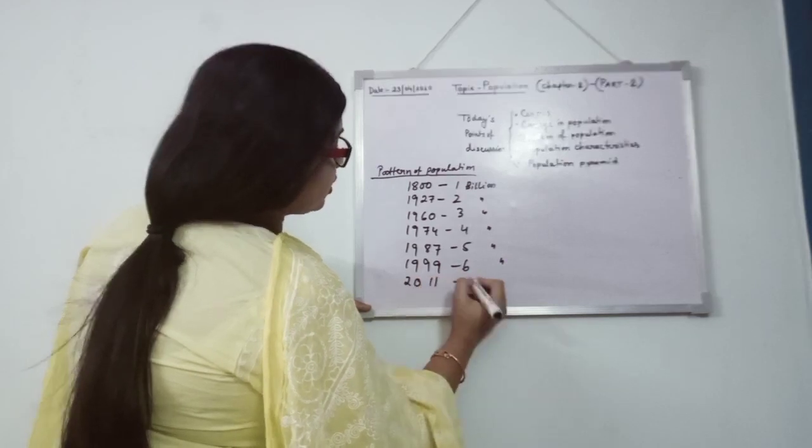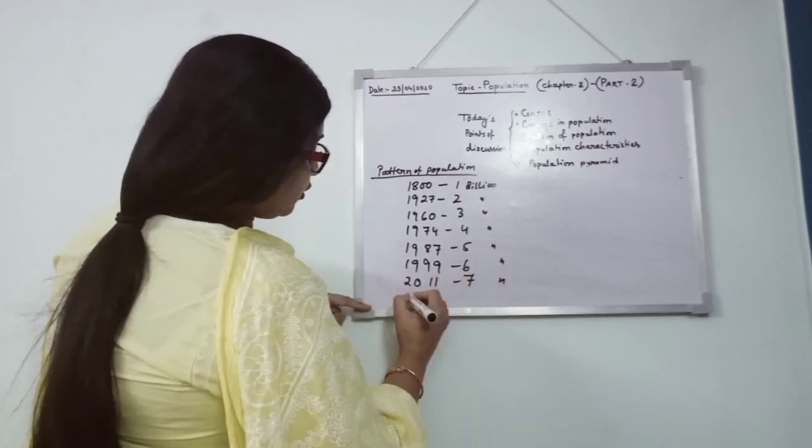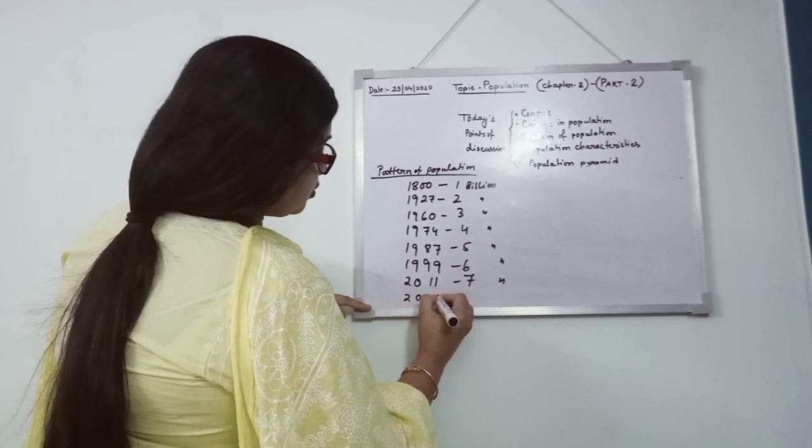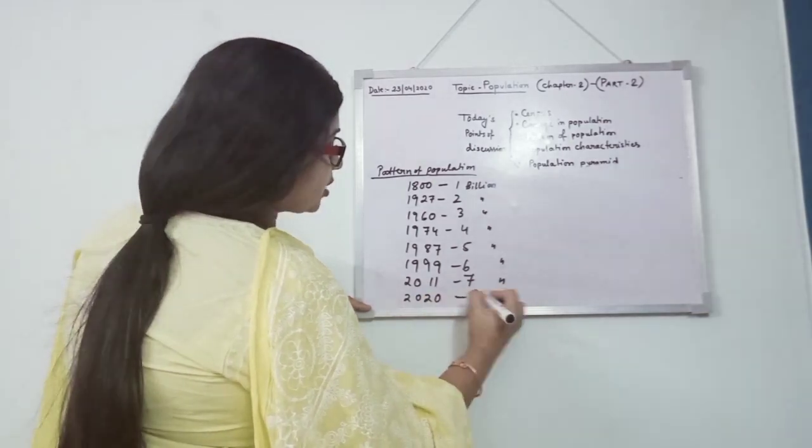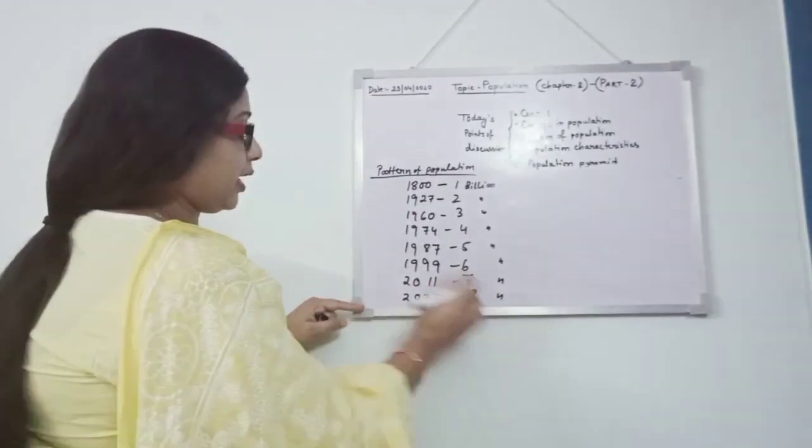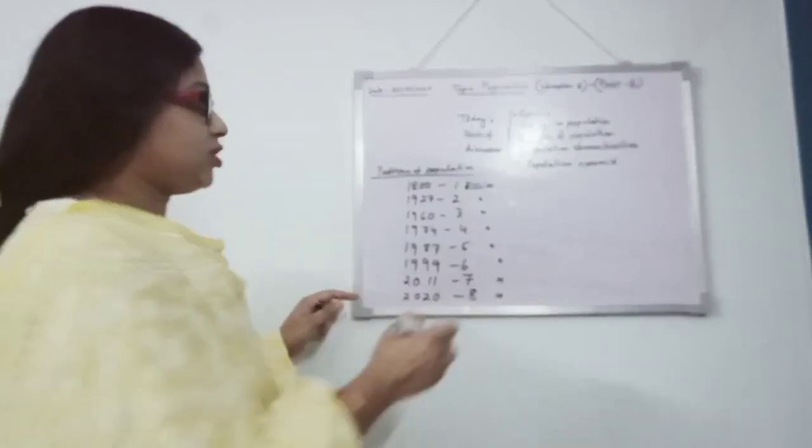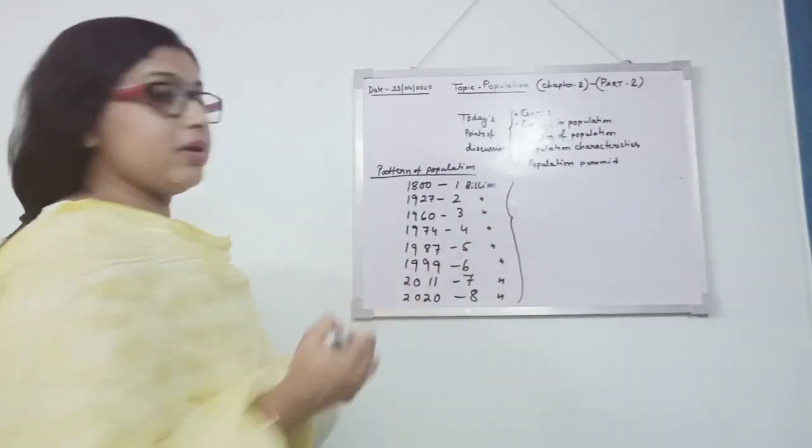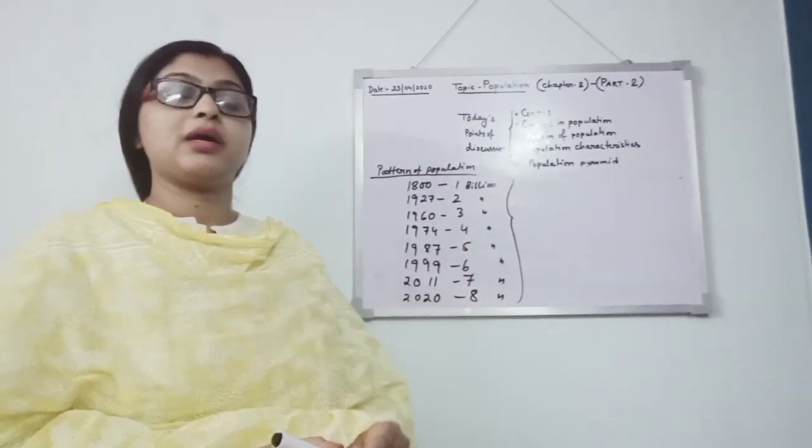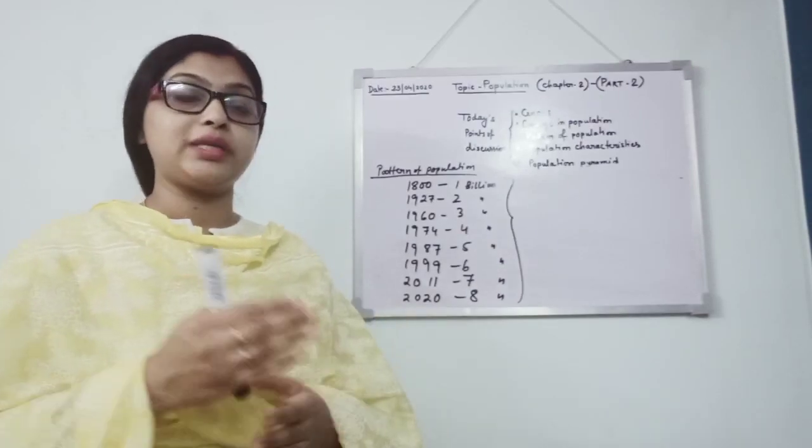2011: 7 billion and 2020 it is running. This time it is 8 billion. Can you imagine how the population is changing and the growth rate how it is increasing.